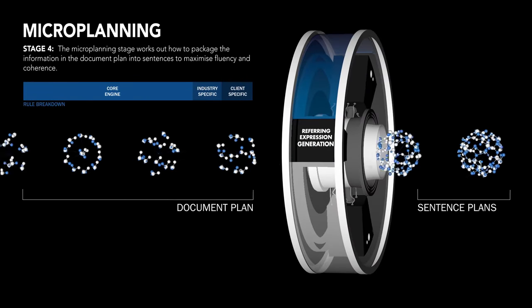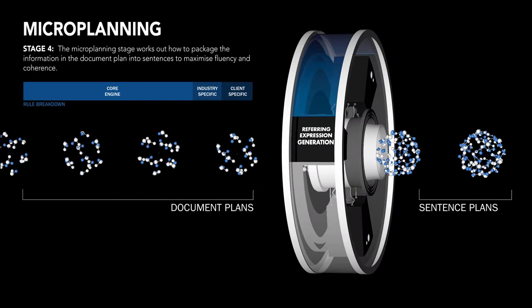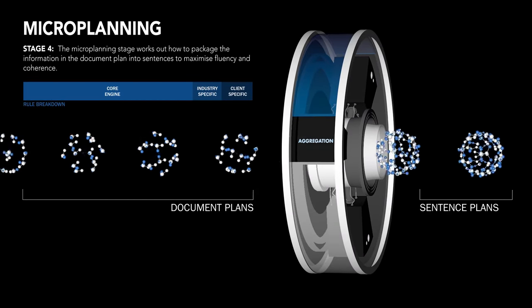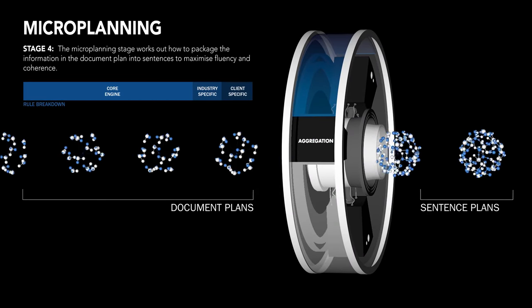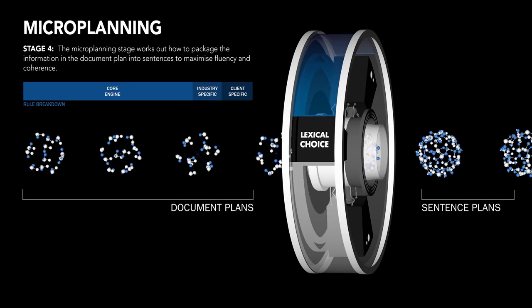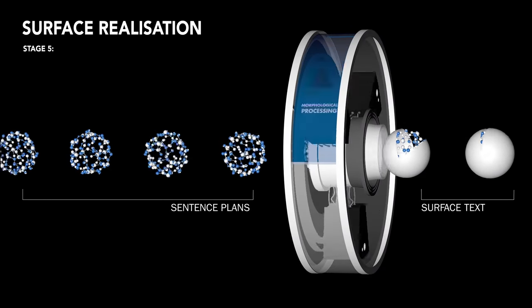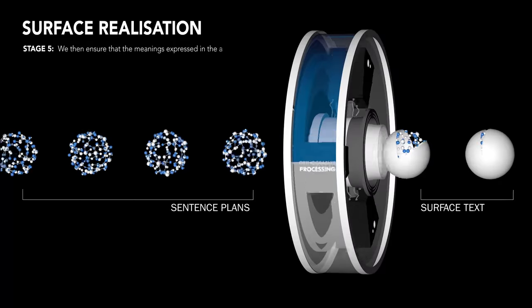The engine can be configured to communicate differently to each end user depending on their technical knowledge or their preference for detail. The application is able to make individual word choices and alter its way of expressing the facts, just like a human does in report writing. This personalization means the NLG engine can speak to all users in their language and context.